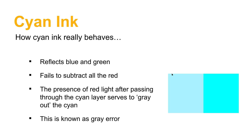Cyan reflects the blue and green, so it looks like cyan to us. The problem is that it's not perfect — it doesn't subtract all the red like it should, and some red slips through. The result is that it washes out the cyan, making it less saturated and graying it out. The graphic on the right shows the square on the left simulating cyan ink on paper with a little bit of red bleeding through, and on the right, that really bright saturated cyan would be the pure cyan color. This is typically known as gray error or cyan gray error.